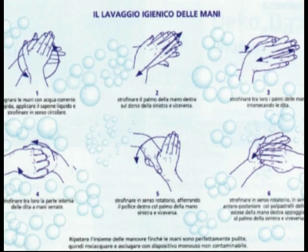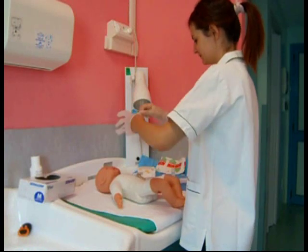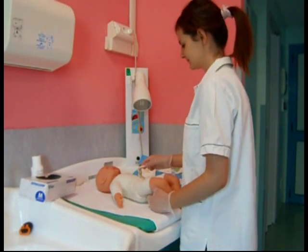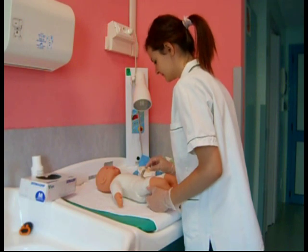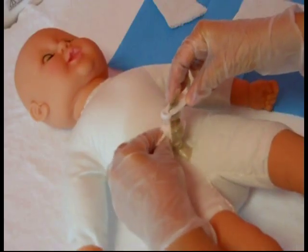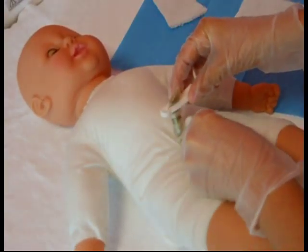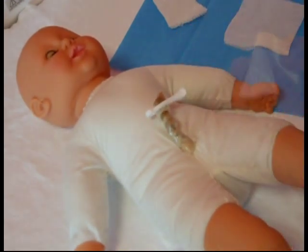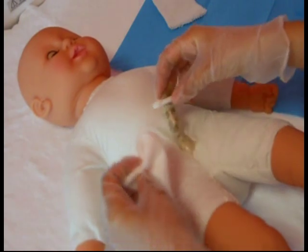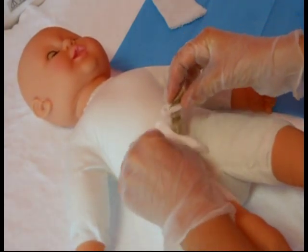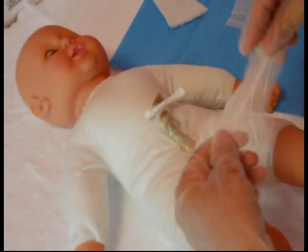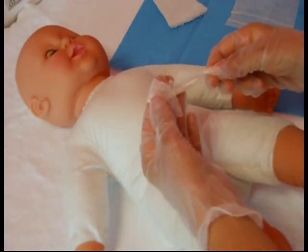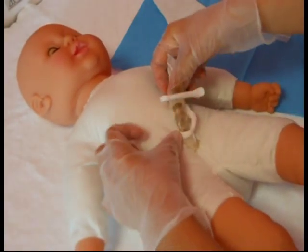Prima di iniziare la procedura, eseguire il lavaggio sociale delle mani e indossare i guanti monouso non sterili. Sollevare il moncone dalla cute in modo da controllare la cute sottostante e detergerne la base con una garza imbevuta di soluzione fisiologica per rimuovere eventuali residui. Ripetere se necessario. Asciugare accuratamente tamponando con delle garze asciutte.